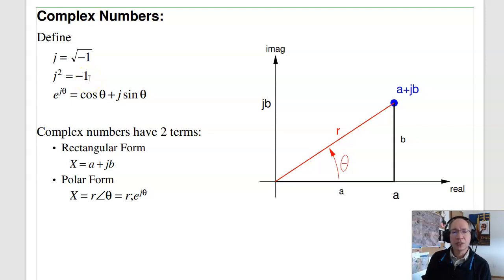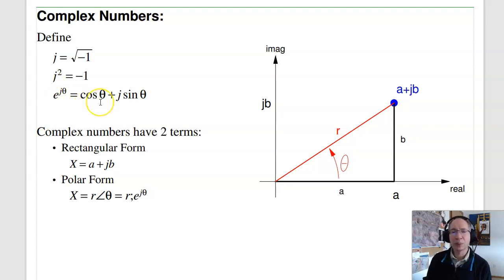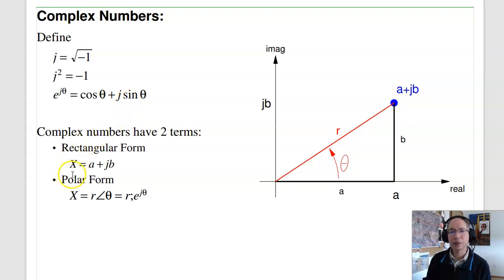There's also Euler's identity. If I have a complex exponential, it has a real part and a complex part. The real part is cosine of the angle; the complex part is J times the sine of the angle. In general, a complex number has two terms. In rectangular form, I can represent it as A plus JB, or in polar form, R at angle theta.